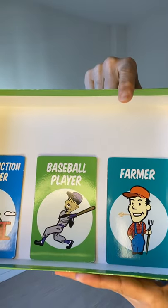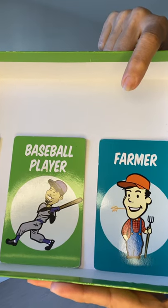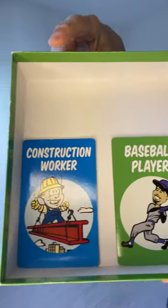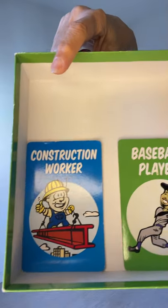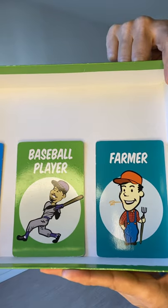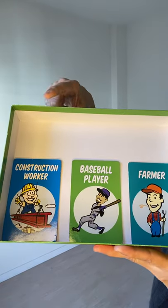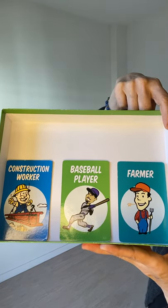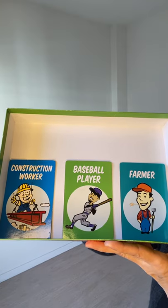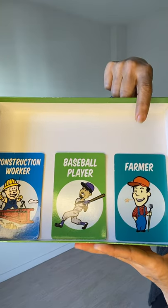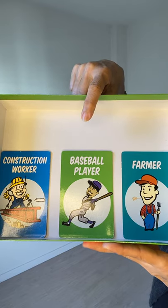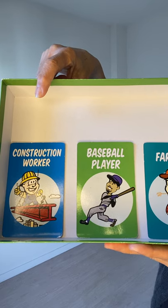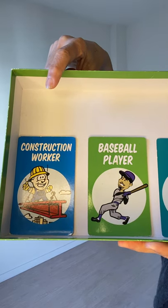Here we have a farmer, a baseball player, and a construction worker. They are all males — they don't have to be males, but in this case they are all men. The farmer works in the fields. The baseball player hits the ball. And the construction worker is a builder — he builds houses.